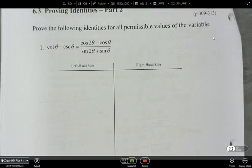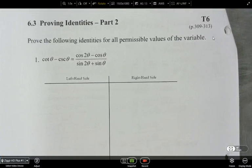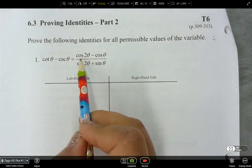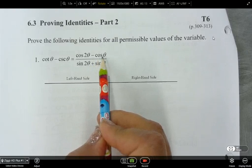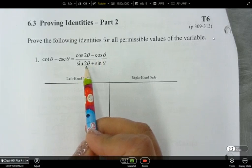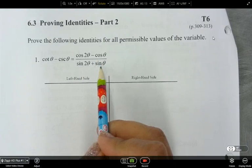Okay, so today we're going to look at proving identities. It's a continuation of Chapter 6, which is T2. The first example that we're going to look at is proving the identities for all permissible values of the variable. So we've got cotangent theta minus cosecant theta, and that's equal to cos 2 theta minus cos theta over sin 2 theta plus sine theta.